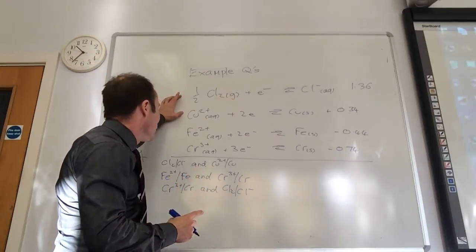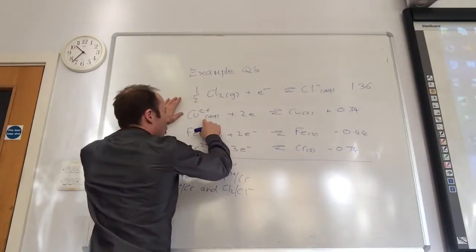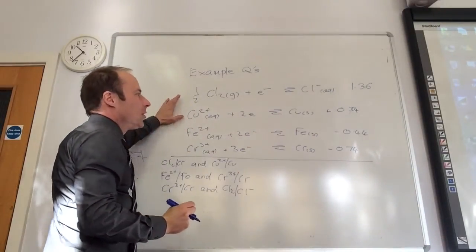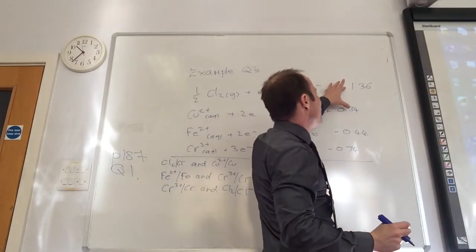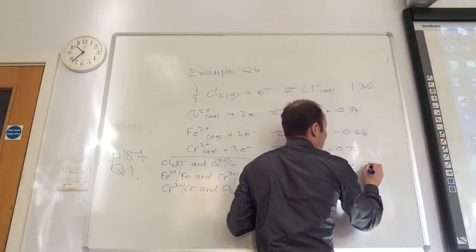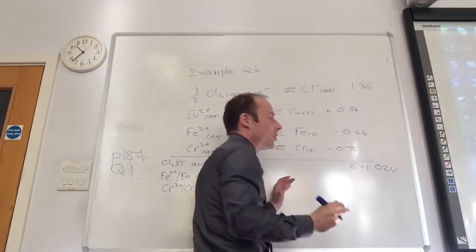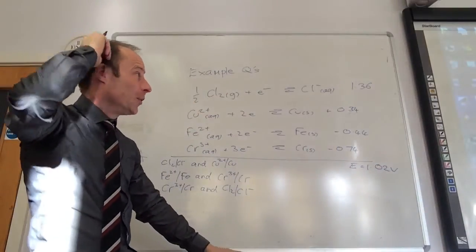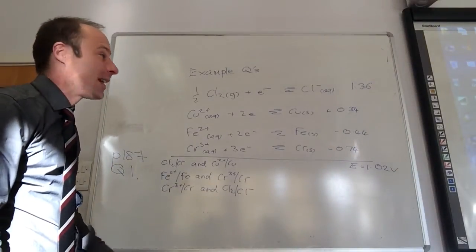So these are the two that they're interested in: Cl2 going to chloride and copper 2 plus going to copper. So first of all, what is the difference between 1.36 and 0.34 volts? 1.02. It's going to be 1.02 volts. So that's the voltage that I would see.